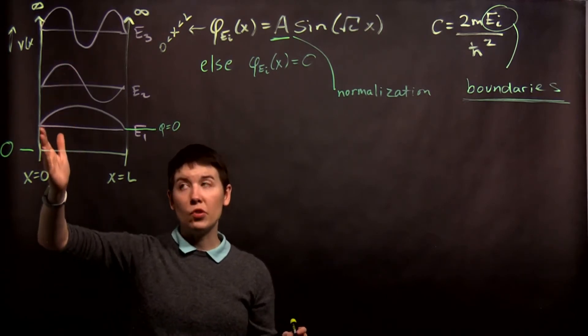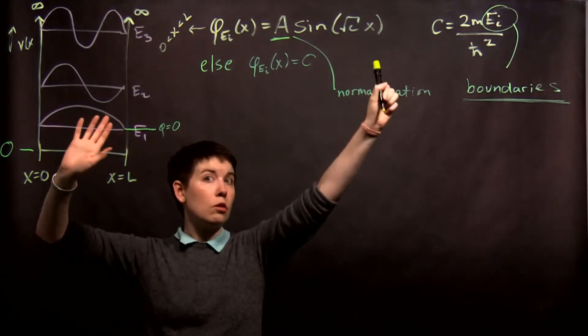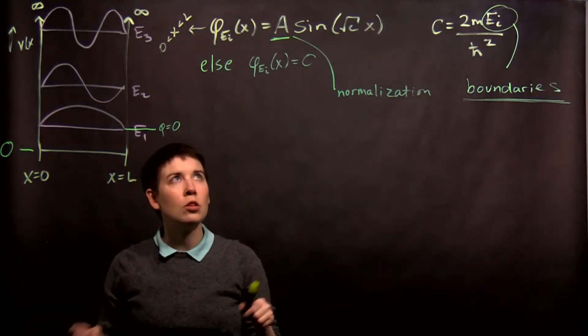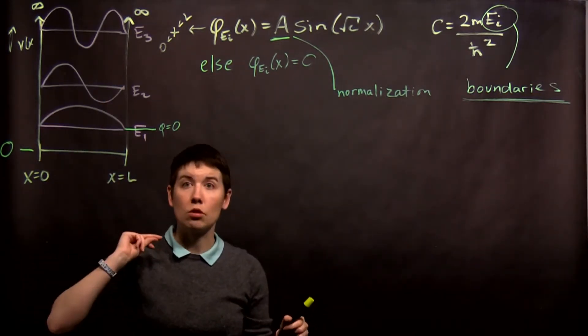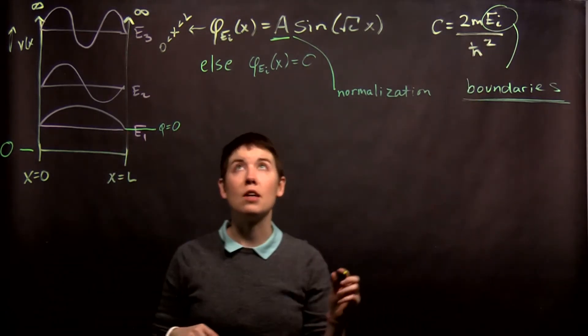We've said that at x equals zero, we in fact have to have our wave function equal to zero. That's why we have sines and no cosines. Now, we look at the other edge. We have two boundaries to worry about. One boundary allowed us to actually throw away the cosine term. The second boundary is going to constrain what these e_i values can be.